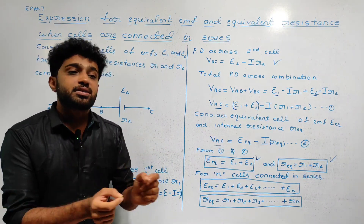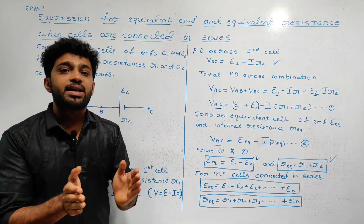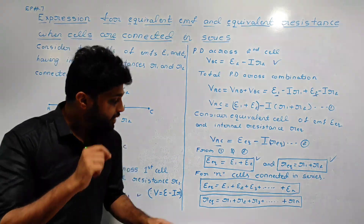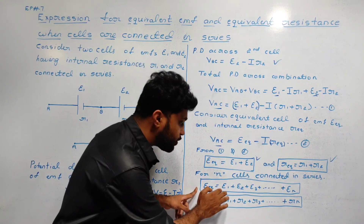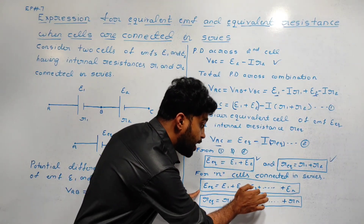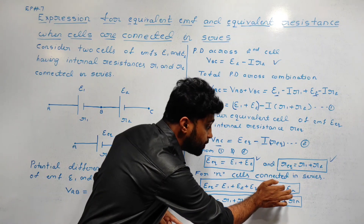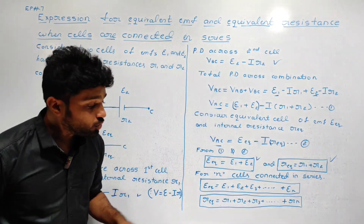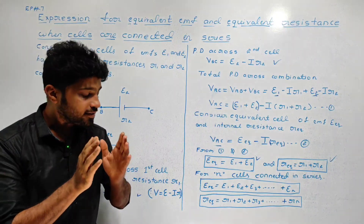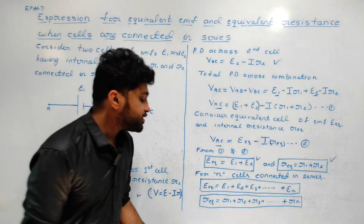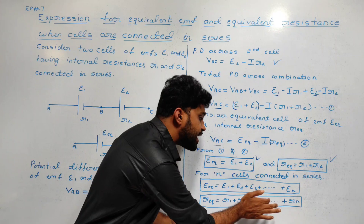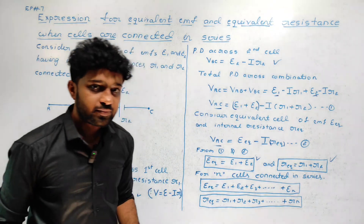If we consider N cells which are connected in series, then the equivalent EMF is equal to E1 plus E2 plus E3 plus and so on plus EN. The equivalent resistance Req is equal to R1 plus R2 plus R3 plus and so on plus Rn.